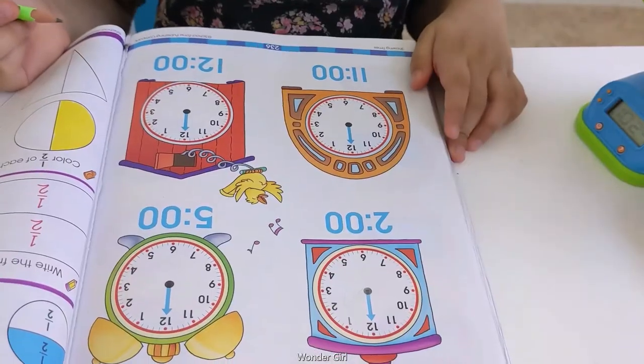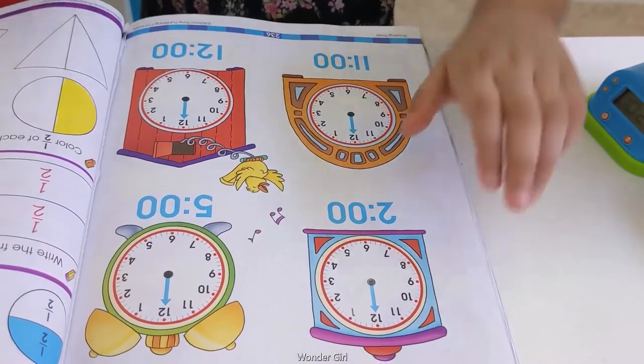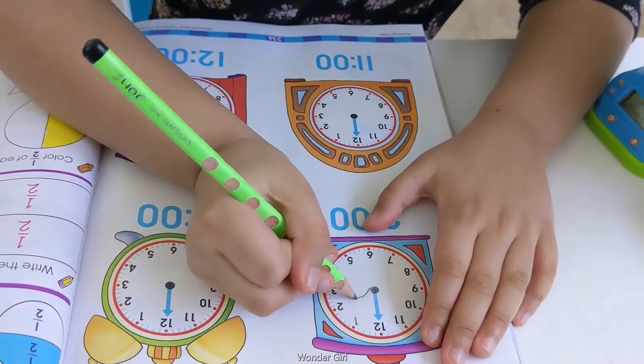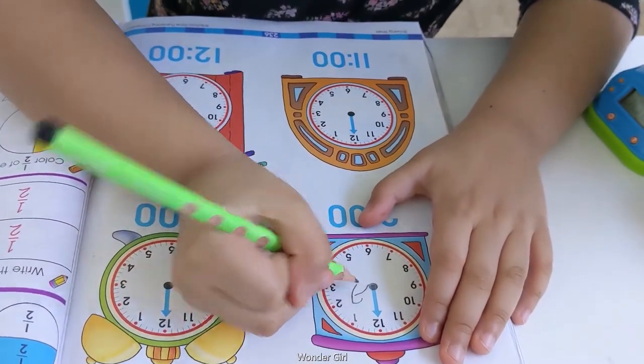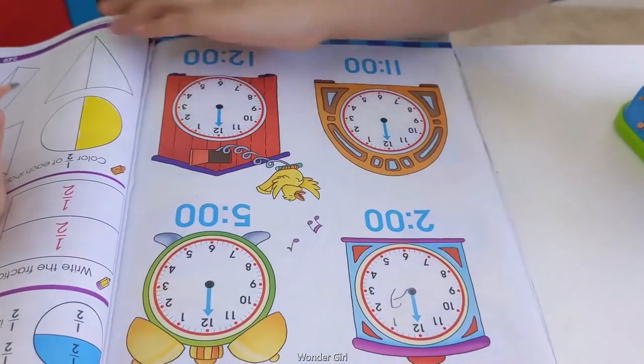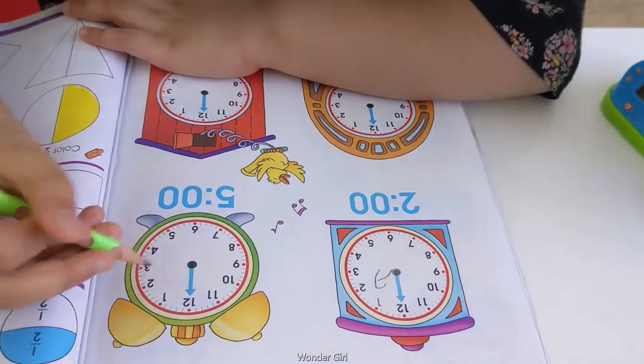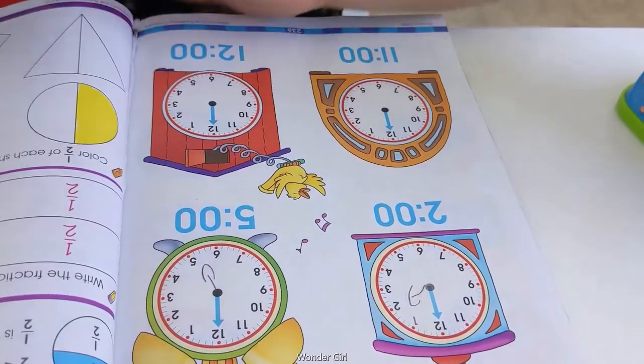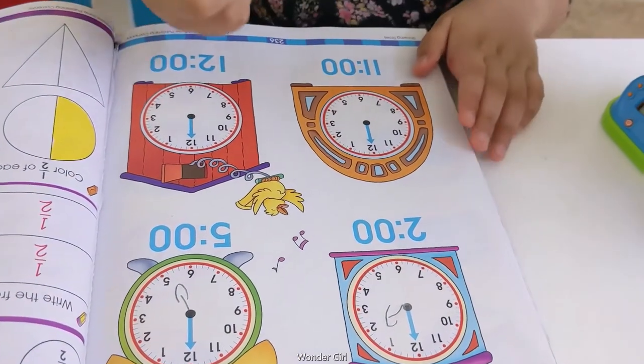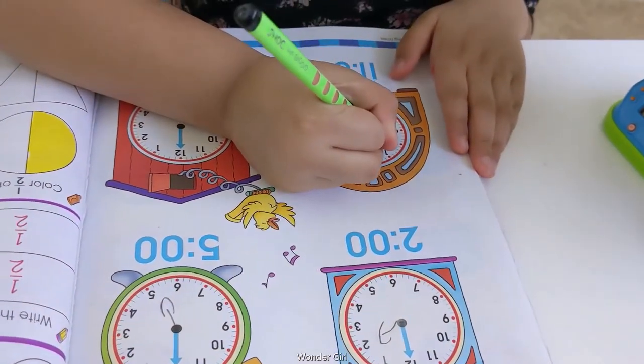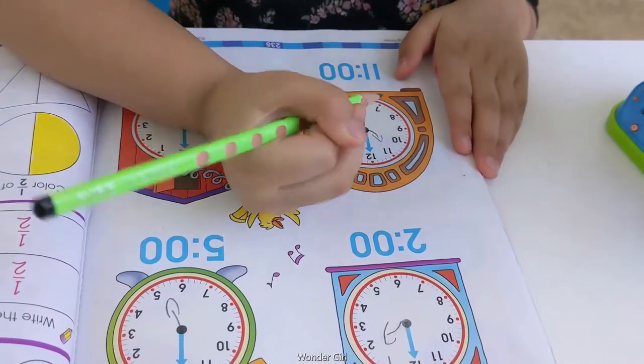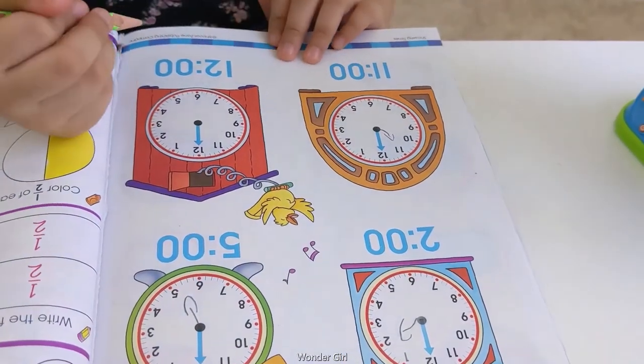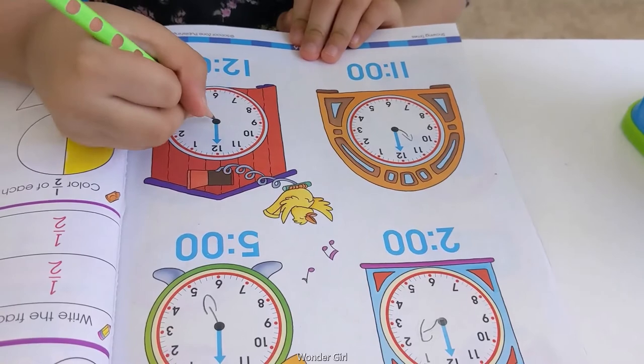This sheet deals with the small hand of the clock. This is 2 o'clock. This is 5 o'clock. This is 11 o'clock. This is 12 o'clock, 5 o'clock.